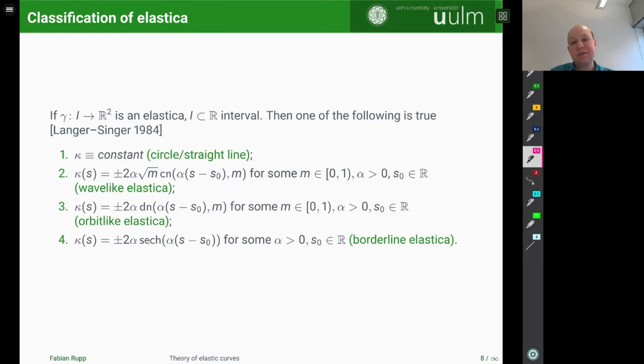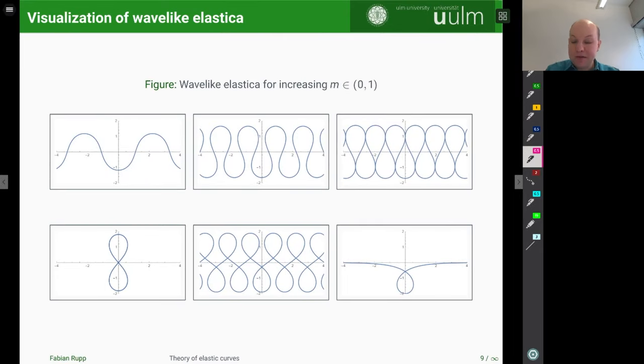So let's start with the case of wave-like elastica. And I've plotted several of those for increasing values of m between 0 and 1. So if m is close to 0, then we just have here such a wave function. So this is because the curvature involves the elliptic cosine, which behaves like the cosine in some sense.